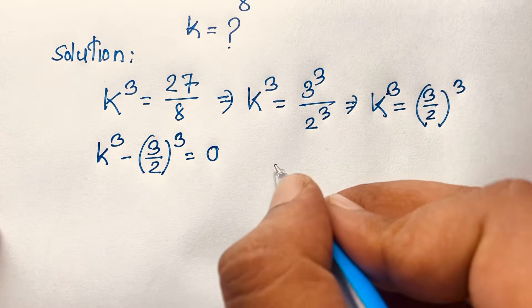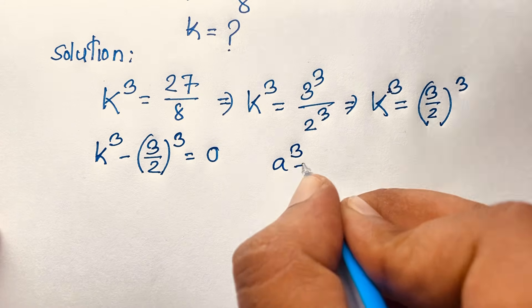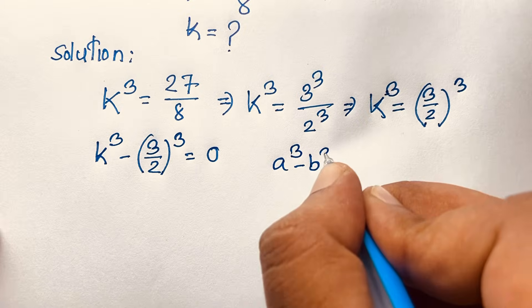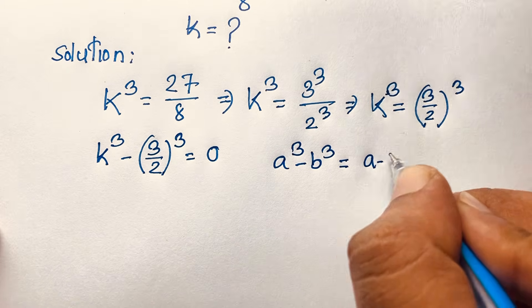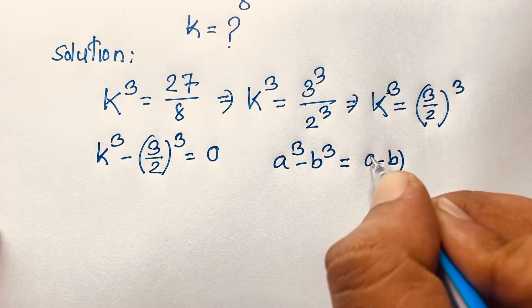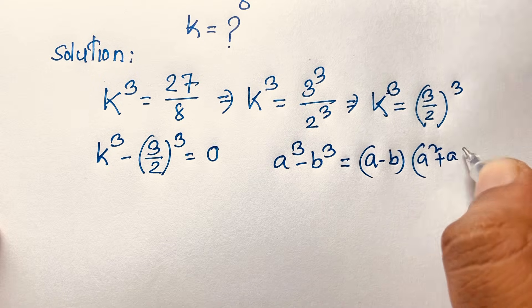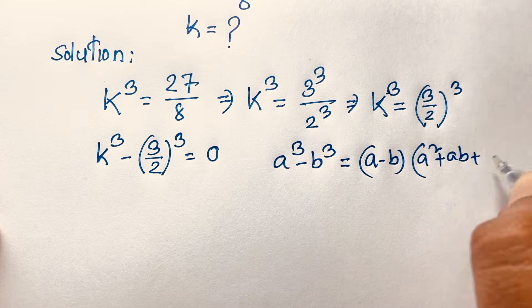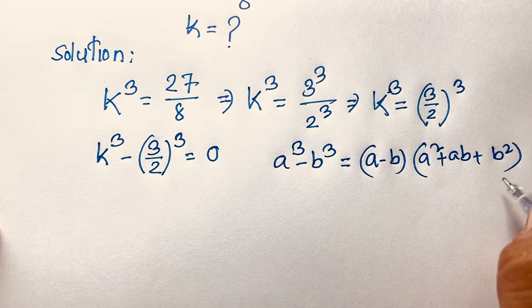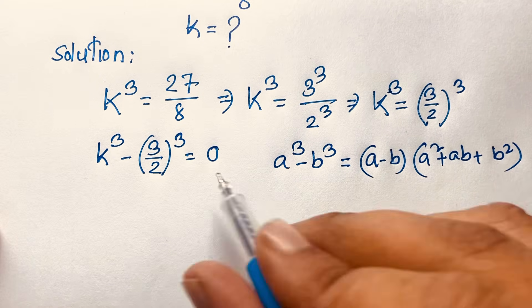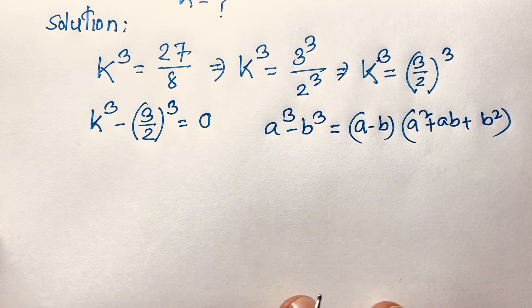Recall that a³ − b³ = (a − b)(a² + ab + b²). We apply this formula here.